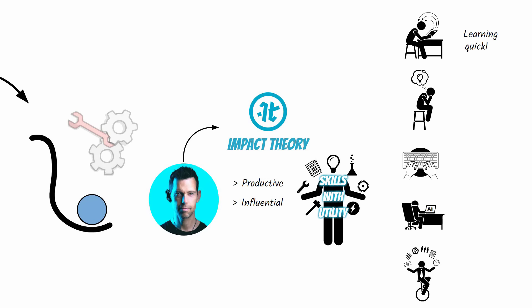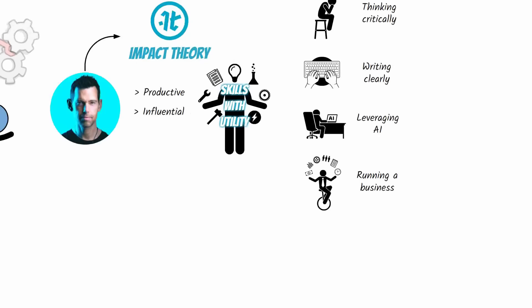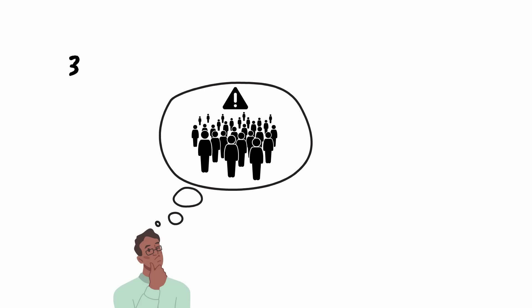Skills like learning quickly, thinking critically, writing clearly, leveraging AI, and running a business make you a more effective human being and extremely useful to others. Think of the people you want to give to and the problems that they have. Then consider three skills you could develop to solve those problems. Then devote yourself to developing those skills while experiencing as much flow as possible.